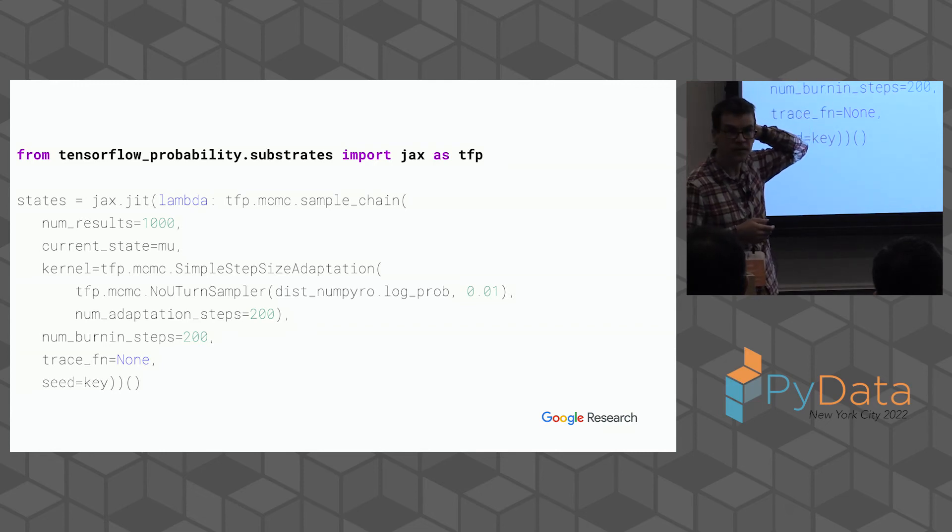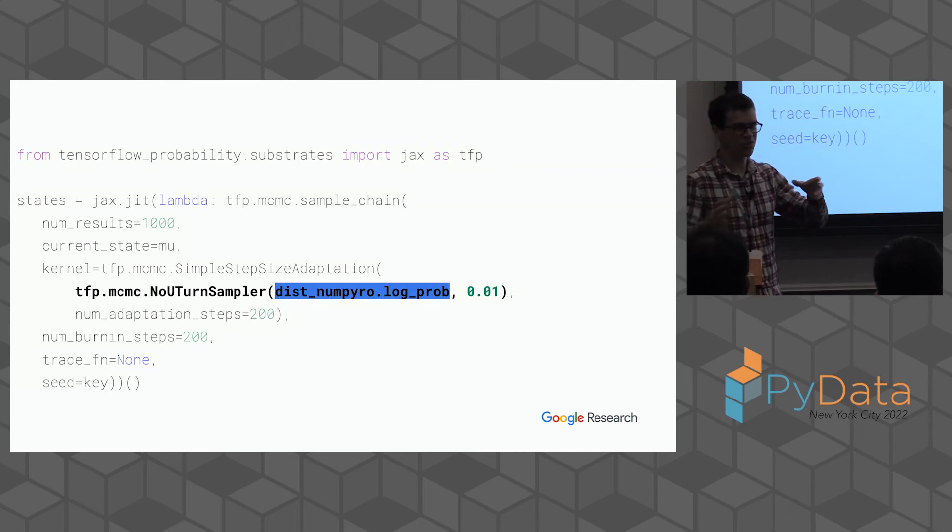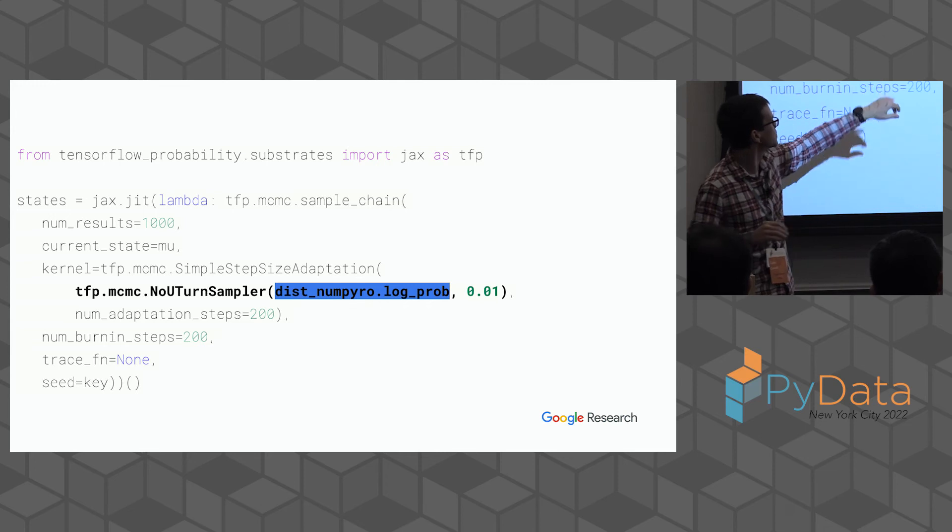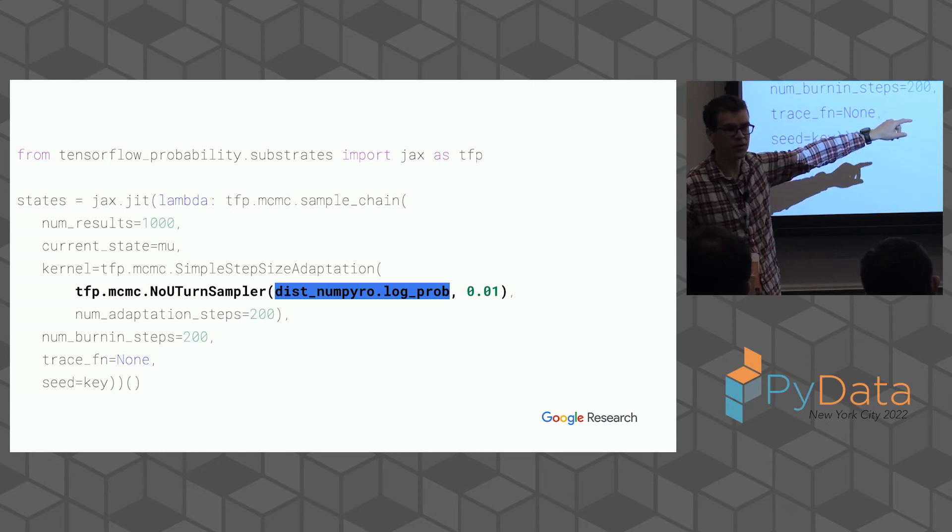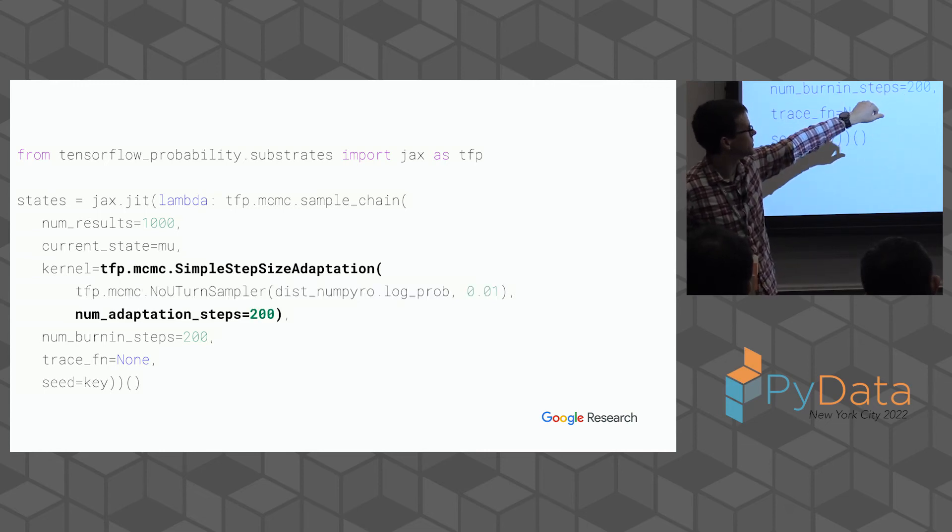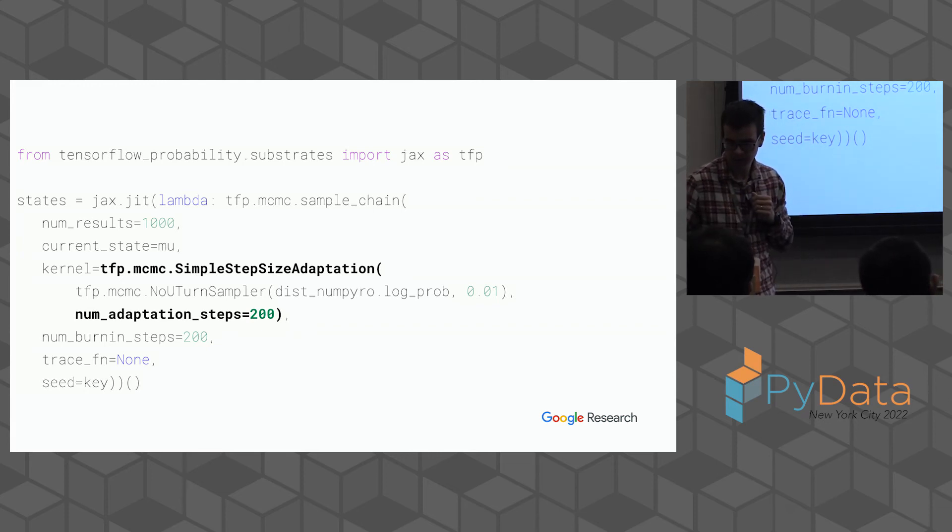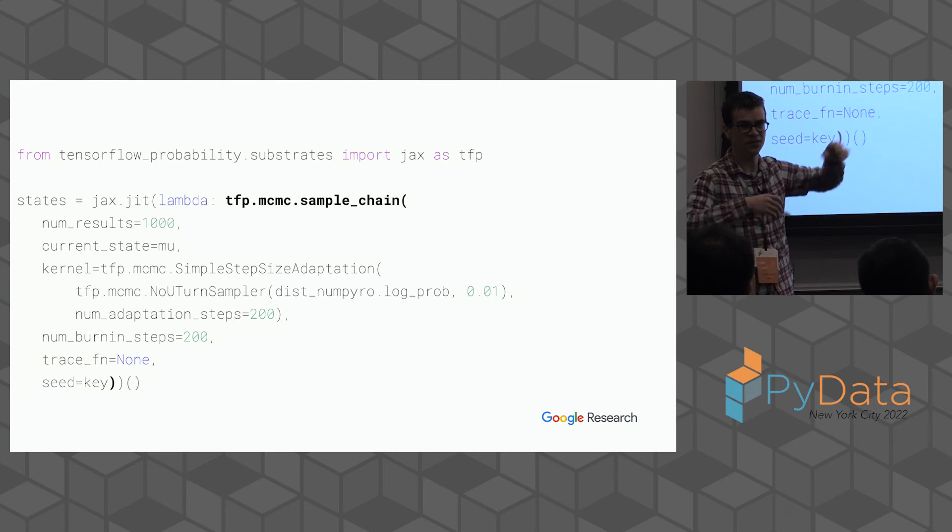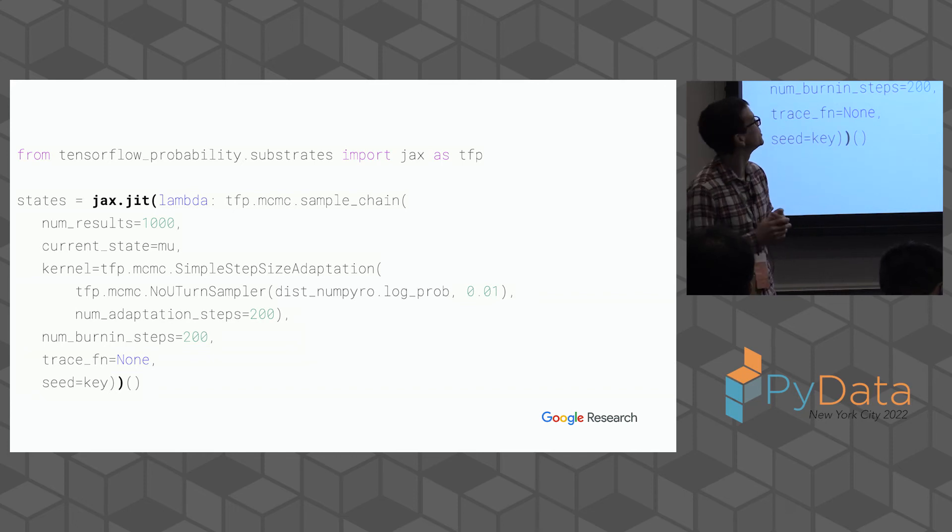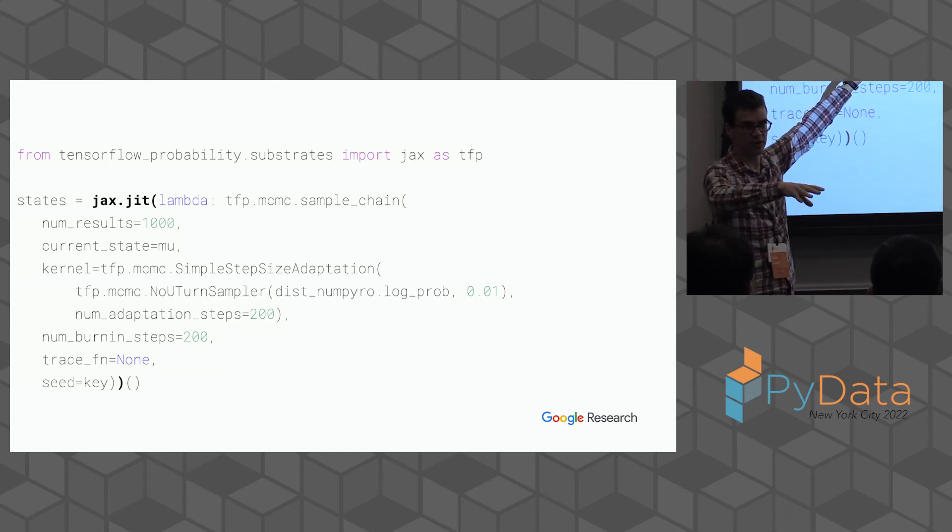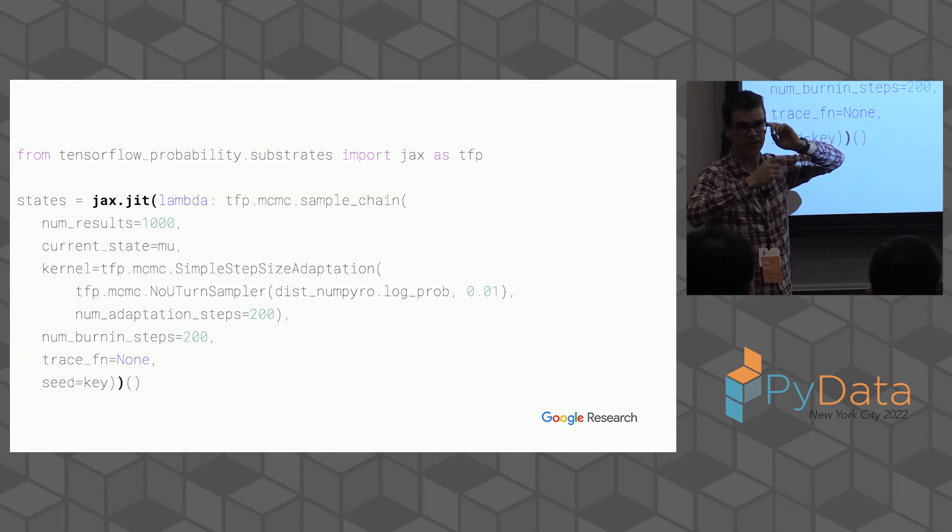Another thing I could do is I could use TensorFlow Probability. TensorFlow Probability takes a different approach to building samplers. You might think of it as an onion, so you start from the inside. Here's the no U-turn sampler. I'm passing the NumPyro log probability. I could pass any of these three. Then outside of that, I put simple step size adaptation that does some tuning to make sure my sampler will be more efficient. Outside of that, I put sample chain. That's going to go and run this MCMC sampler for some number of steps. Outside of that, I put JAX.jit. That makes everything go fast.